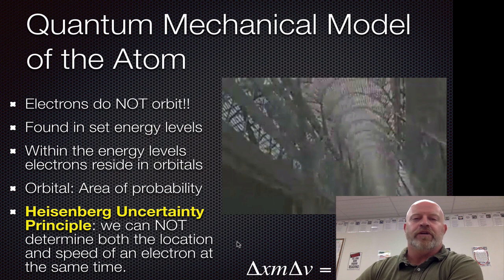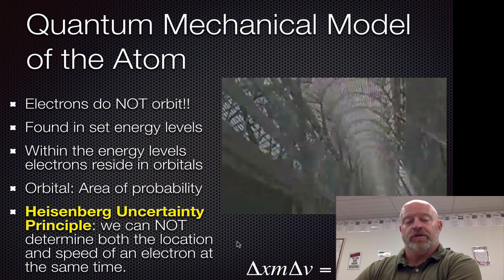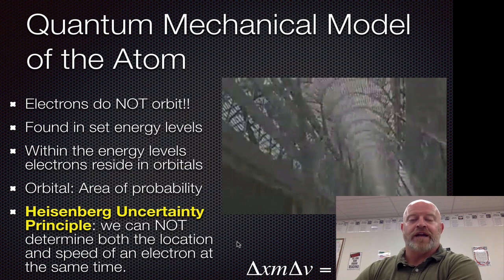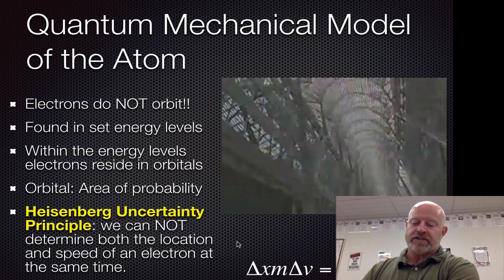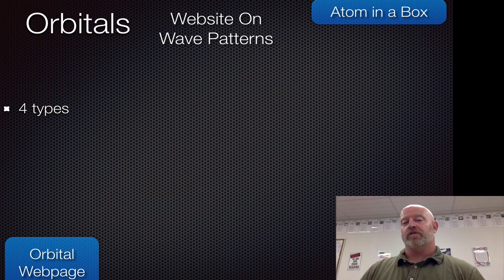They talked about a lot of different things in that video and we'll hit them in more detail as we go through our next few slides. The key here is that within our different energy levels — the one through seven we've talked about before — we actually have different orbitals, and those orbitals have different orientations. It's not as simple as just rings around an atom like in the planetary model. It's a much more complex system and we'll break it all down as we move forward. So first, let's talk about these different orbitals — what they are and what they look like.